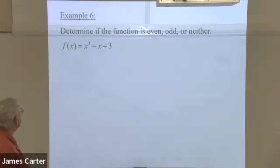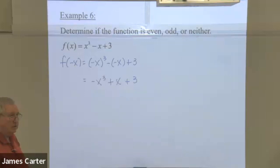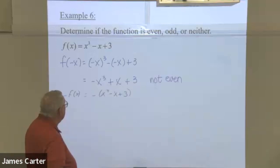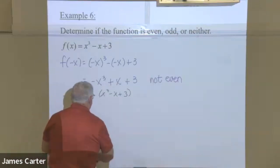Here's another one. In this case, when we replace x with negative x, we don't get the same original equation. So this one is not even. Let's see if it's odd. We take this modified equation and we take a negative times it. I've got my signs here and here.